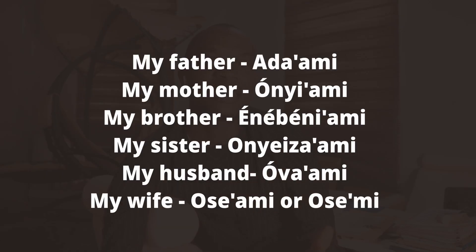To make the words possessive — to show that these people are yours, to say 'my father,' 'my mother,' 'my brother,' 'my sister' — all you need to add to each of these words is '-ami' to show possession. For instance, if you want to say 'my father' you say 'adami.' Do you understand? Adami.